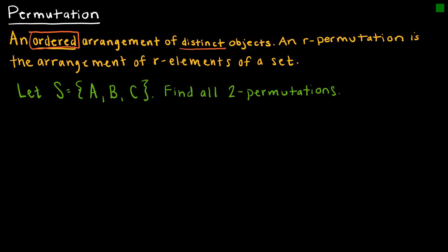An R permutation is the arrangement of R elements of a set. For instance, with set S containing three elements A, B, C, if I were to find all of the two permutations, AB and AC would be elements of that set, but AA would not because the objects must be distinct. Then we also have BA, BC, CA, and CB. Order makes a difference because otherwise AB and BA would really be the same thing.